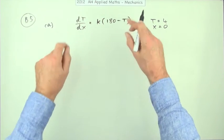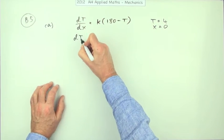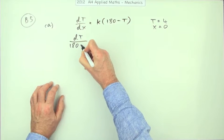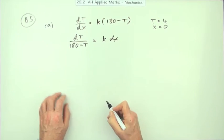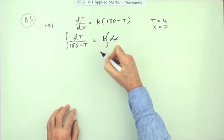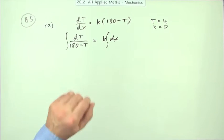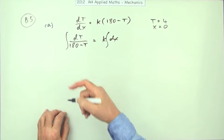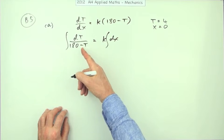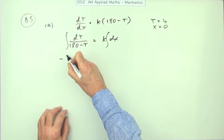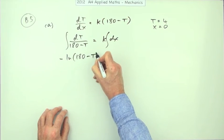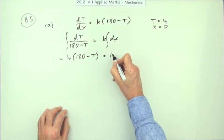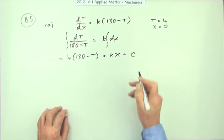Separate the variables: dt over (180 minus t) equals k dx. Then integrate both sides. There's a nice log here with a linear denominator. Notice it has a negative first derivative, so that gives us negative ln(180 minus t) equals kx plus c.